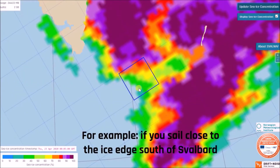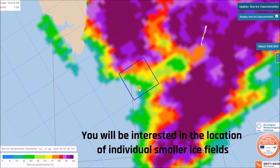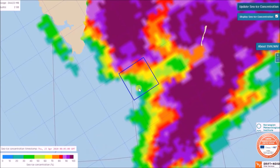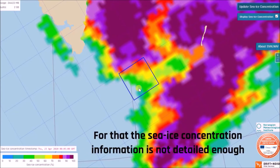For example, if you stay close to the ice edge south of Svalbard, you will be interested in the location of individual smaller ice fields and the axial structure of the ice edge. For that, CIS concentration information is not detailed enough.